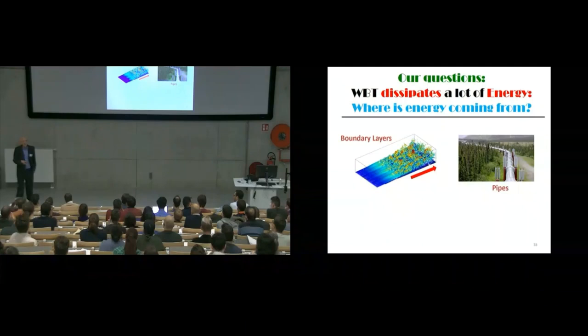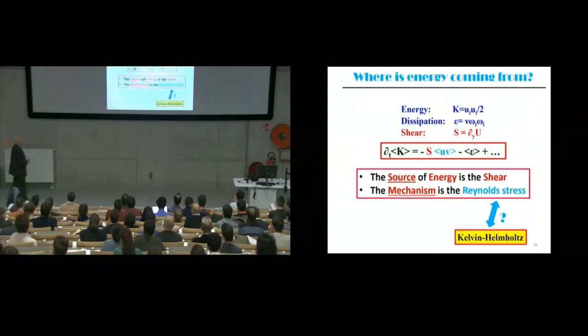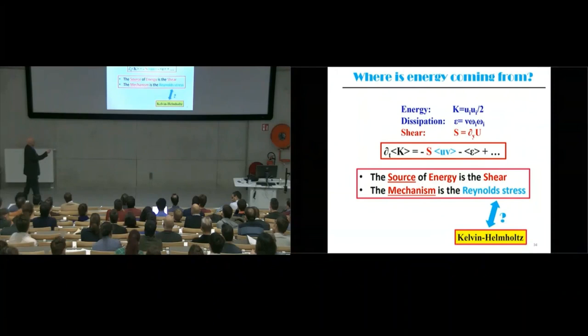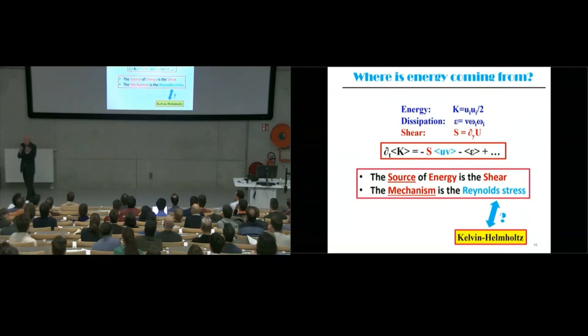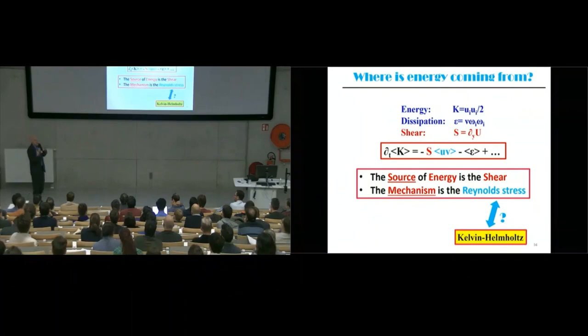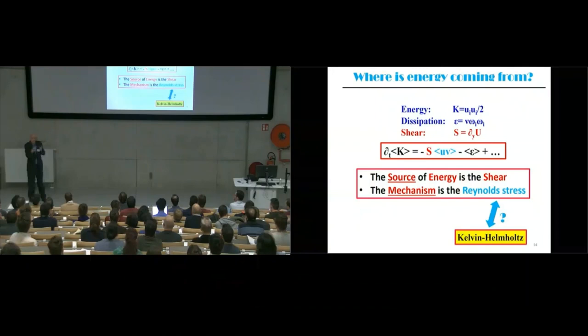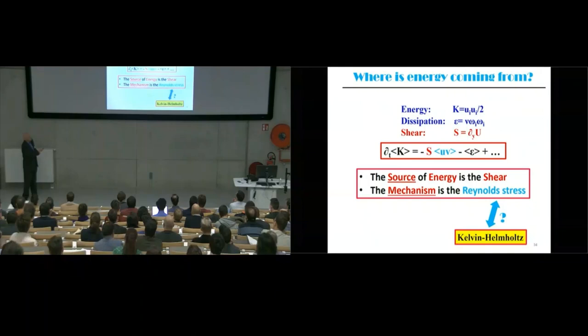I told you that 5% of the energy is being spent in this — where is the energy coming from? We know where it comes from. We have an equation for the kinetic energy with a production term and a dissipation term. The dissipation term has to do with viscosity and happens down at the smallest scales. The production term is the product of two things: one is the shear. The only place where you have a reservoir of energy is in the shear — the fact that the velocity here is higher than the velocity there. The mechanism by which this energy is put into the flow is through the Reynolds stresses, so the production is the product of the shear and the Reynolds stresses.